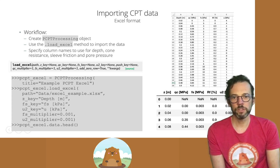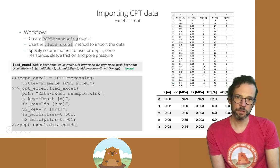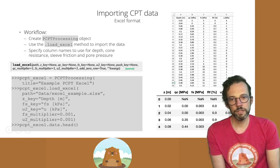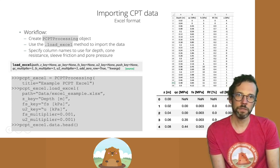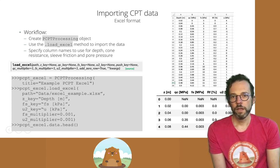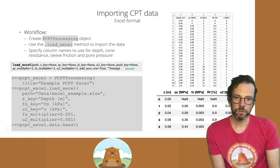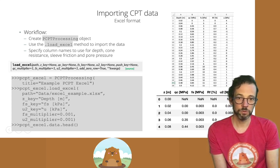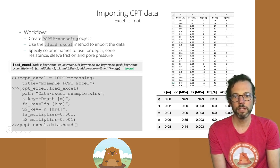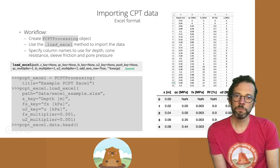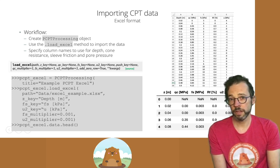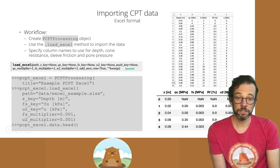If we look at the Excel file provided on the right, we can see that the depth column does not have the required Z [meters] name. The sleeve friction and the pore pressure are provided in kPa instead of MPa, and there is no push number. We can get the data into the requested format by specifying that our Z key is 'depth meters', that our sleeve friction column is 'FS kPa', and that our U2 column is 'U kPa' instead of 'U2 MPa'.